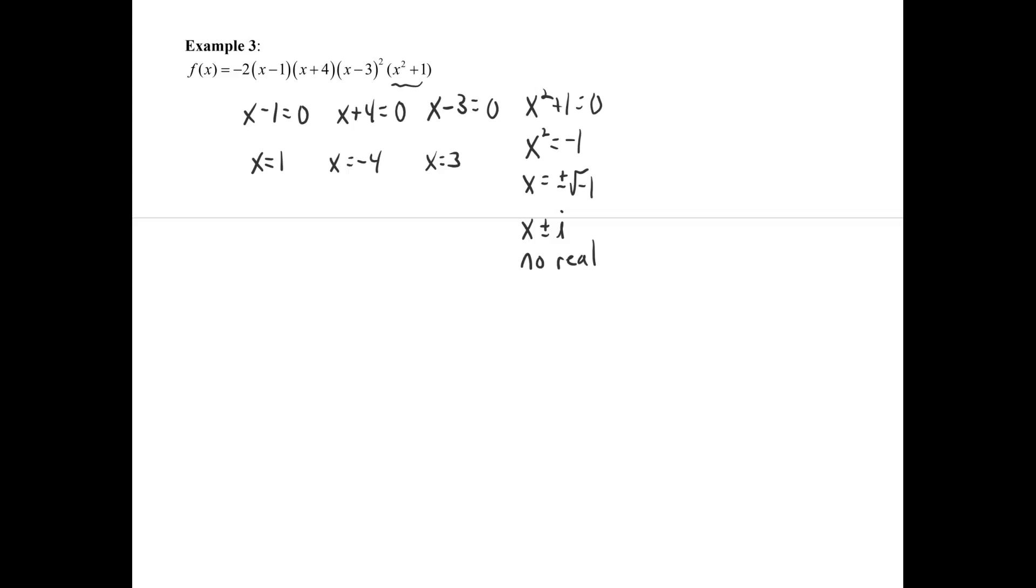So this is no real zeros from that factor. That last factor does not generate any real zeros. In other words, no x-intercept. No real zero means no x-intercept. They're the same thing. But the others are all zeros.